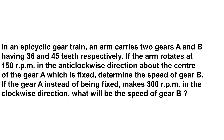The question is: in an epicyclic gear train, an arm carries two gears A and B having 36 and 45 teeth respectively. If the arm rotates at 150 RPM in the anti-clockwise direction about the center of the gear A which is fixed, determine the speed of gear B. If gear A, instead of being fixed, makes 300 RPM in the clockwise direction, what will be the speed of gear B?